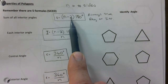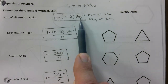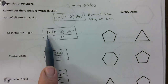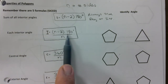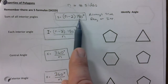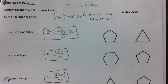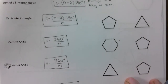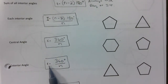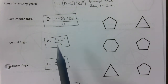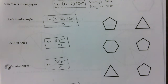The sum of all interior angles is denoted by S: it's (n minus 2) times 180 degrees. Each interior angle is very similar to the first formula except you divide by the number of sides. The central angle and exterior angle use the same formula — we'll explain that in a bit.